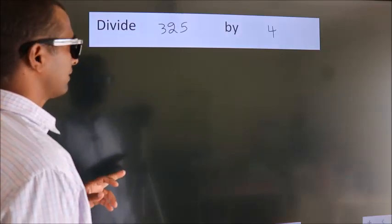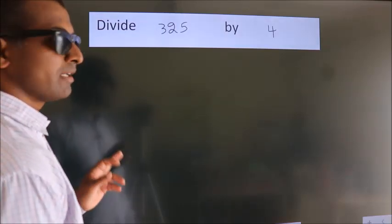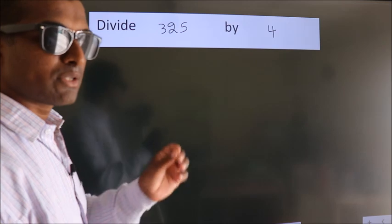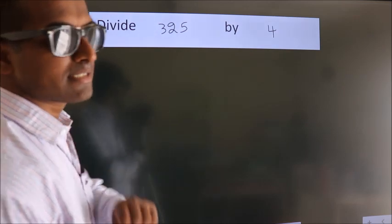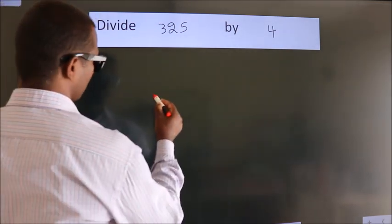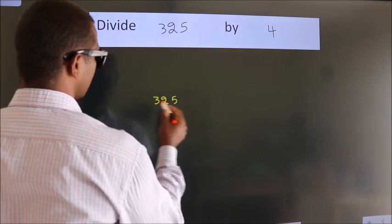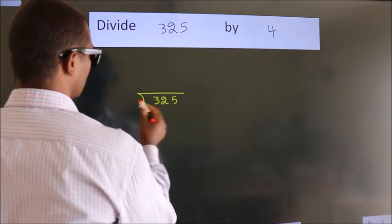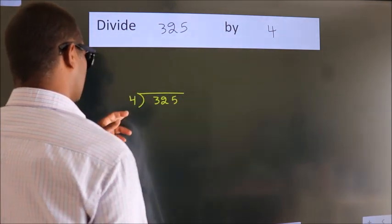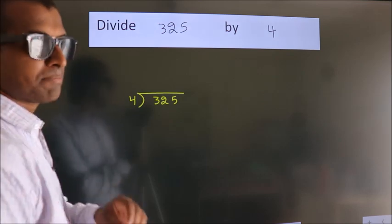Divide 32.5 by 4. To do this division, we should frame it in this way. 32.5 here, 4 here. This is your step 1.